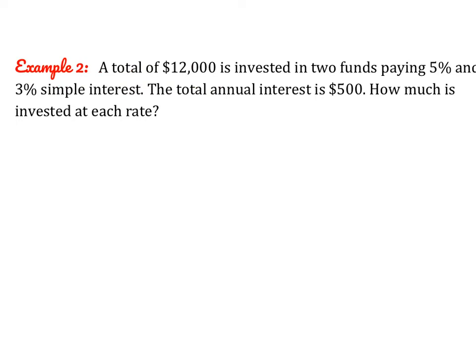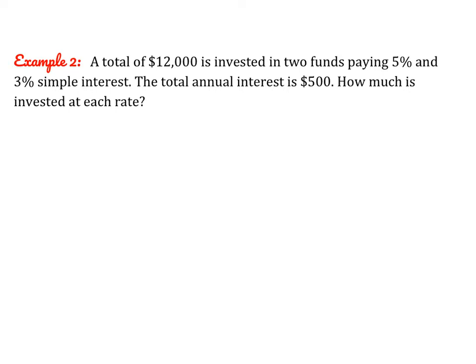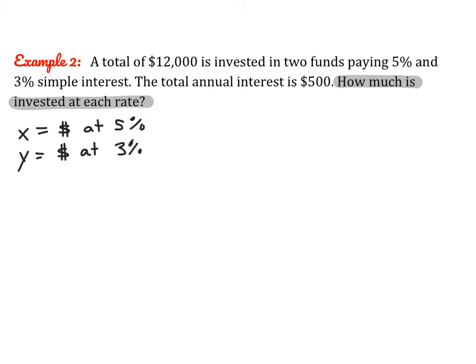Now let's try a more application-based problem. A total of $12,000 is invested in two funds paying 5% and 3% simple interest. The total annual interest is $500. How much is invested at each rate? Since we have two different funds, we have two variables. Let x be the number of dollars invested at 5%, and y be the number of dollars invested at 3%. Since a total of $12,000 is invested, x plus y equals $12,000.